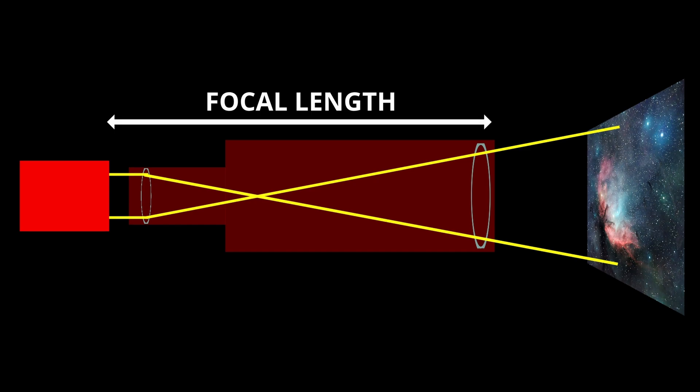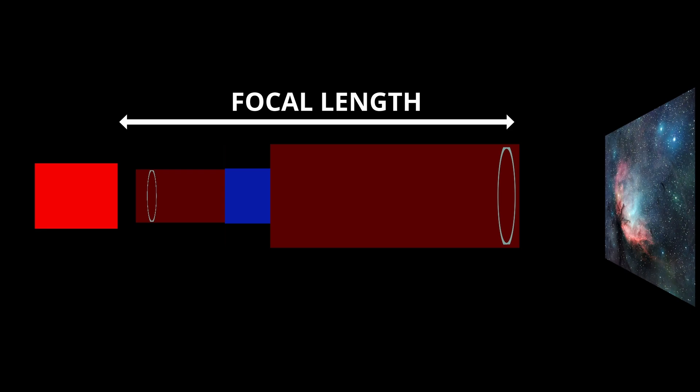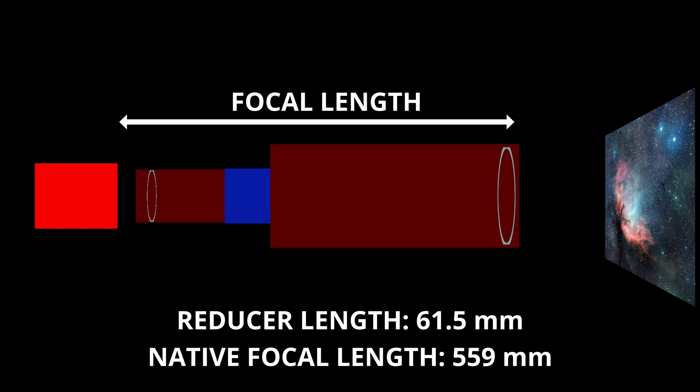Now if I add a reducer to the back of the telescope, I'm actually physically lengthening the telescope. In fact, the telescope that I used for the image at the beginning of this video was an 81mm Williams Optics refractor, and it will be our model for this video. It has a native focal length of 559mm. And the reducer that was screwed into the image train at the back is 61.5mm long. If focal length is only a physical characteristic of the length of a telescope, then adding the reducer should have physically added 61.5mm to the telescope's total focal length, for a new focal length of 620.5mm, a substantial increase.